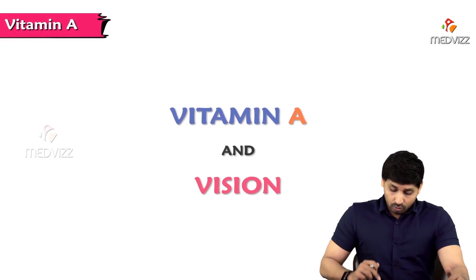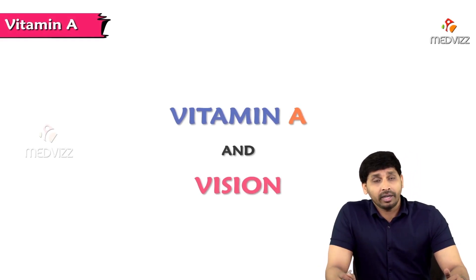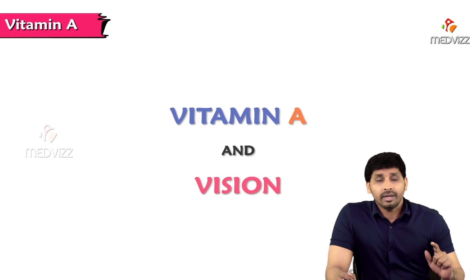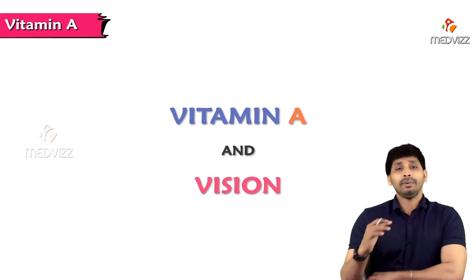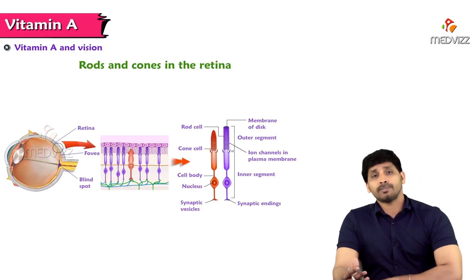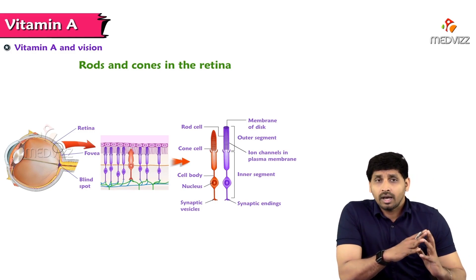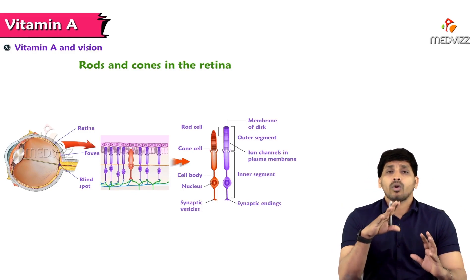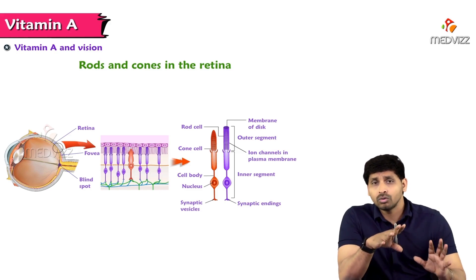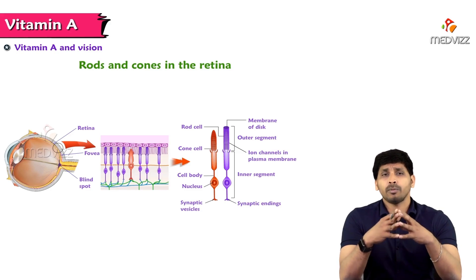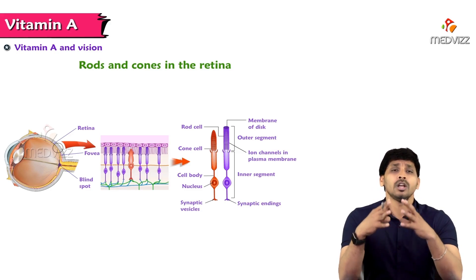Let's talk about the functions of Vitamin A. The main function to stress is Vitamin A's role in healthy vision. In our retina, there are two types of cells: rods and cones. Rod cells are mainly concerned with night vision, and cone cells are mainly concerned with daylight and color vision.